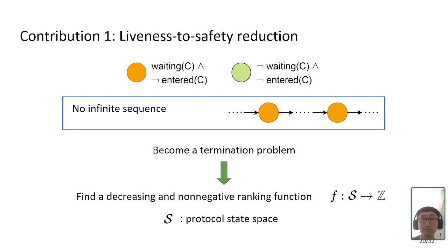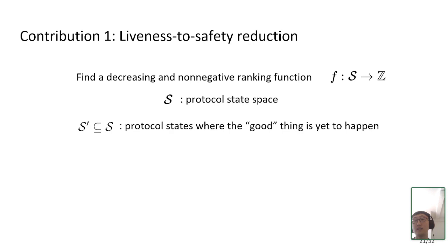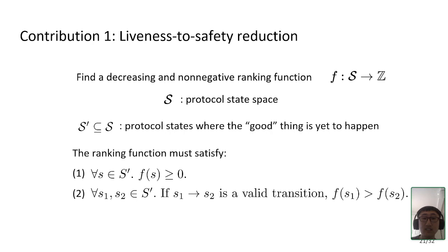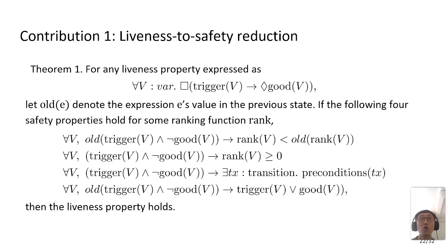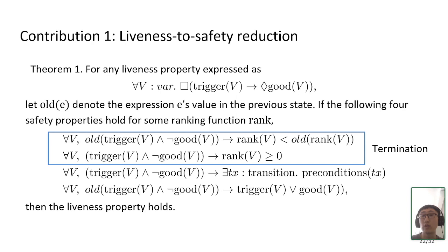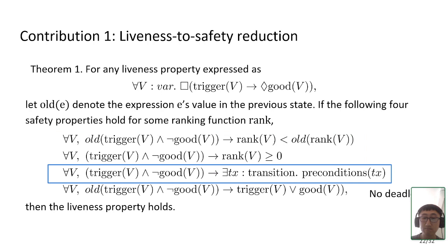More formally, let S' be the protocol state where the good thing is yet to happen. We need to find a ranking function F such that for any such state it is non-negative, and for any pair of states with a valid transition between them, the ranking function must strictly decrease. This reduction is not specific to ticket lock — it holds for any liveness property of the form: as long as some trigger event happens, eventually some good thing will happen. Most practical distributed protocols can have their liveness properties expressed in this form, allowing reduction to four safety properties. The first two correspond to the termination property, the third to no-deadlock, and the last to no-give-up.